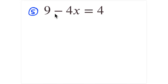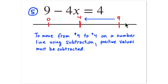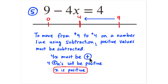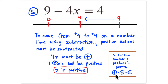Problem 5: you start at positive nine, subtract some amount, and end at positive four. On a number line, the only way to move from positive nine down to positive four using subtraction is to subtract positive values. So 4x must equal five, meaning 4x is positive. Since a positive number of positives is positive, x must be positive.